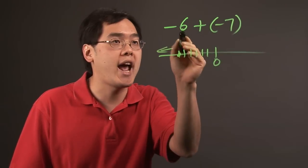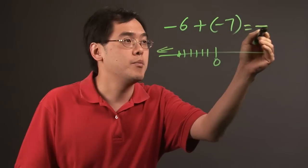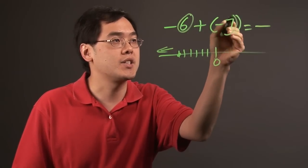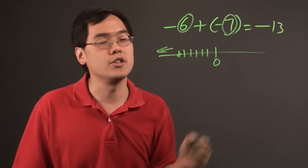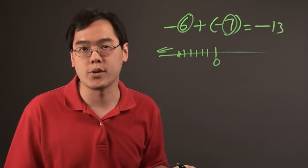What that means here is you're going to keep the negative sign, but then you're going to add the 6 and the 7, and you're going to have 13. So -6 + (-7) is going to be -13.